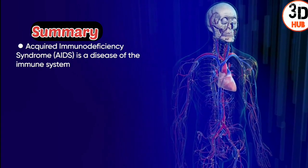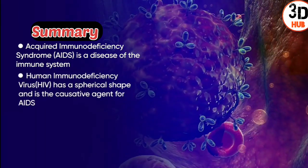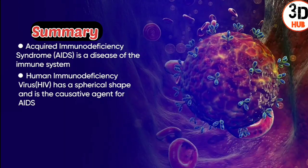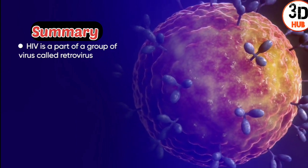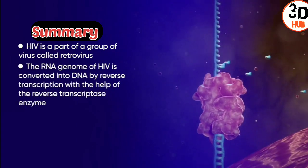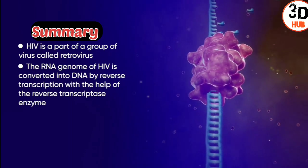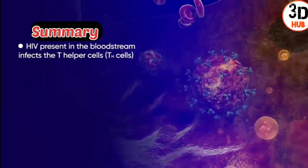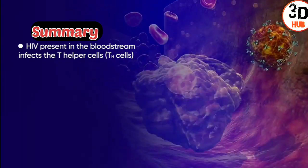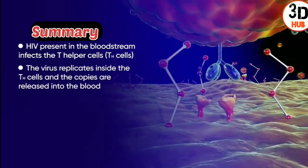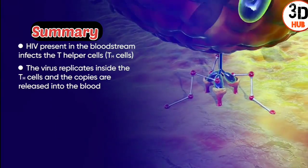In summary: acquired immunodeficiency syndrome, AIDS, is a disease of the human immune system. HIV has a spherical shape and is the causative agent of AIDS. HIV is part of a group of viruses called retroviruses. The RNA genome of HIV is converted into DNA by reverse transcription with the help of the reverse transcriptase enzyme. As HIV moves in the bloodstream, it contacts the T helper cells, binds to them, and fuses with the membrane, infecting the TH cell.